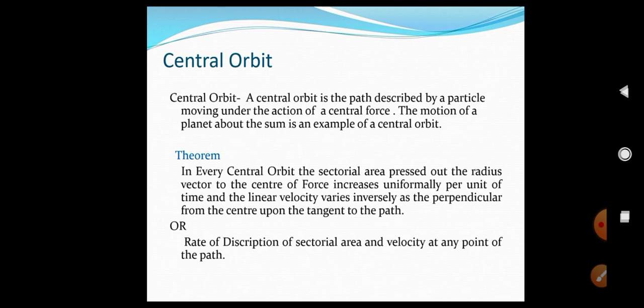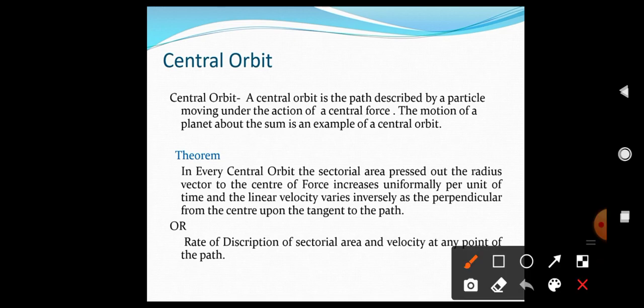Good morning all. Today our topic of discussion is from DSC2, the paper name is Dynamics, and the chapter we are going to discuss is Central Orbit. Let us first understand what we mean by the central orbit. To understand the central orbit, let us first understand what we mean by the central force. A force whose line of action always passes through a fixed point is called a central force, and that fixed point is known as the center of force.